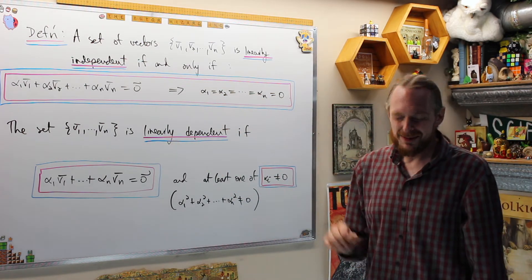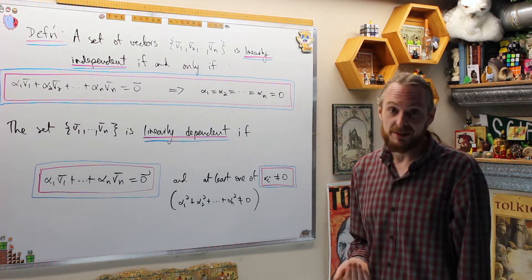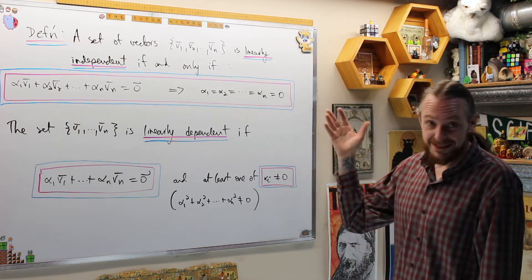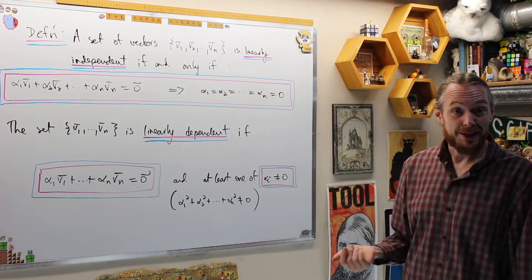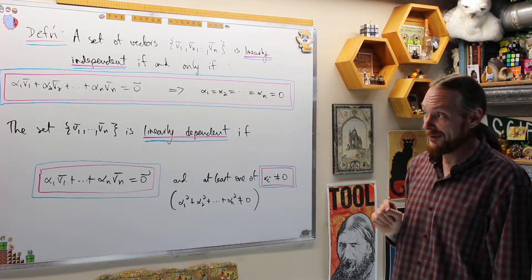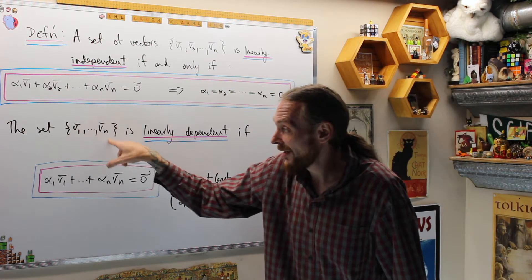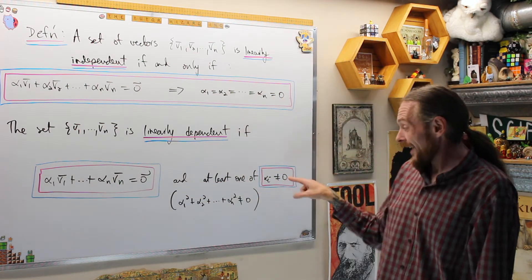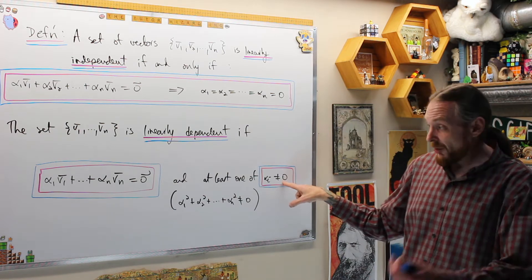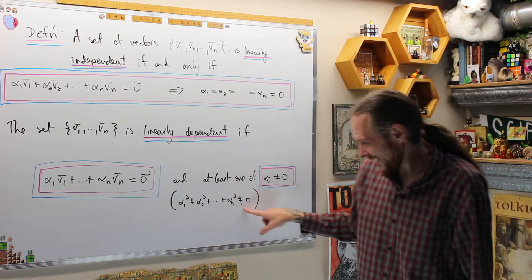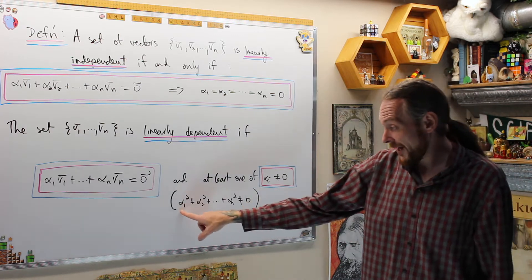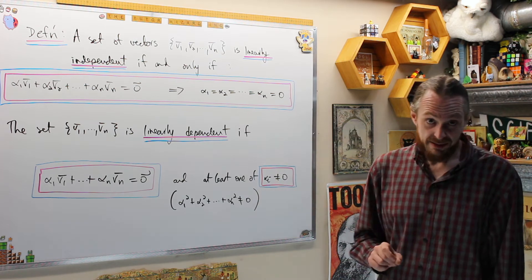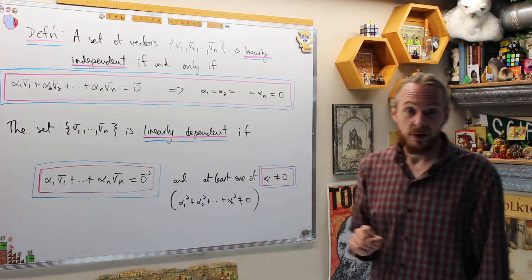Go back to the previous examples and watch those more closely — that's why we've arrived at this definition of linear independence. The parasitic definition: normally books say it's dependent if they're not independent, which isn't very helpful. So we call v₁ to vₙ linearly dependent if we can write zero as a linear combination of those vectors where at least one of those coefficients is non-zero.